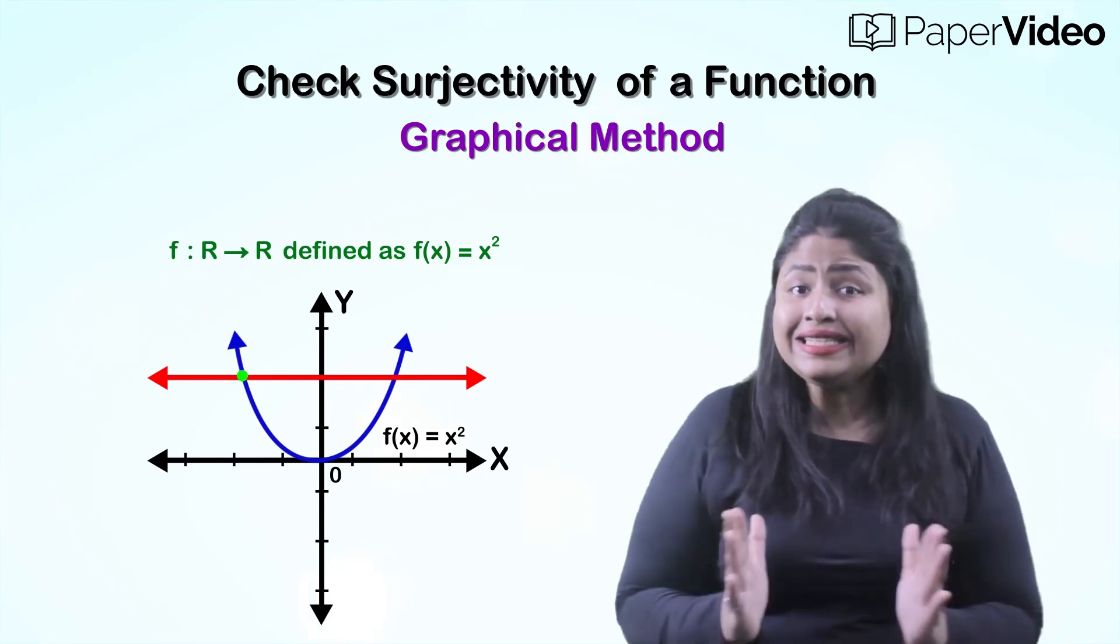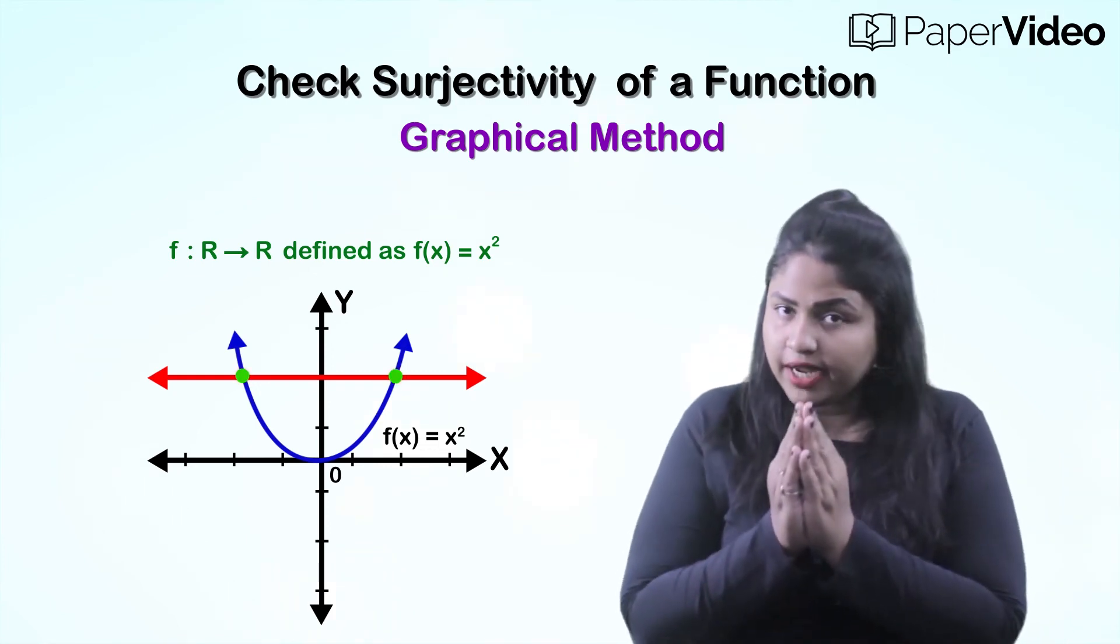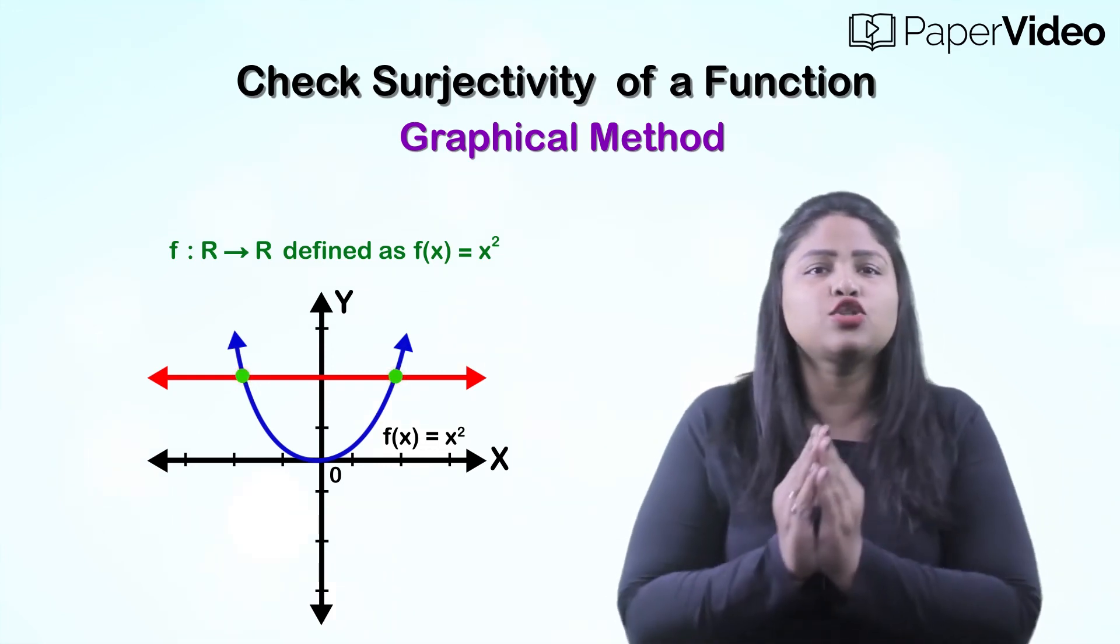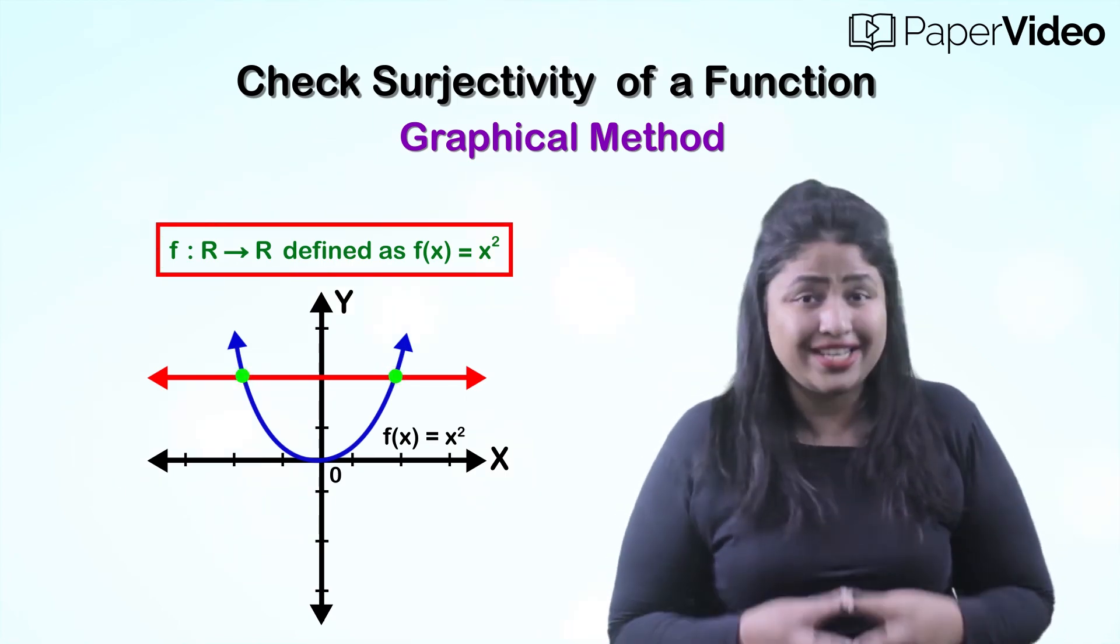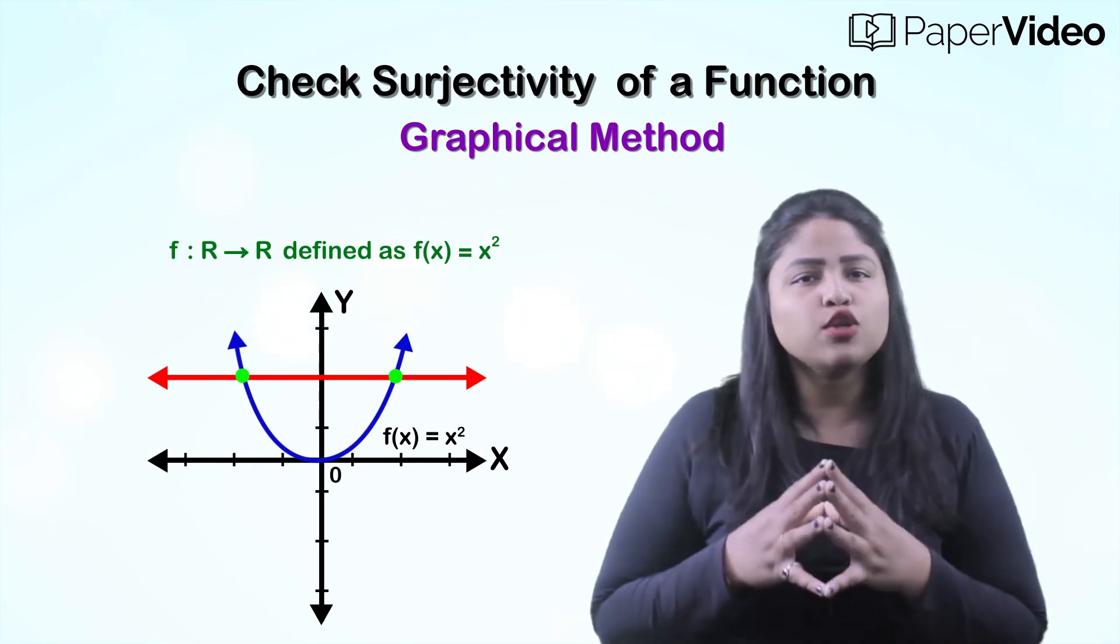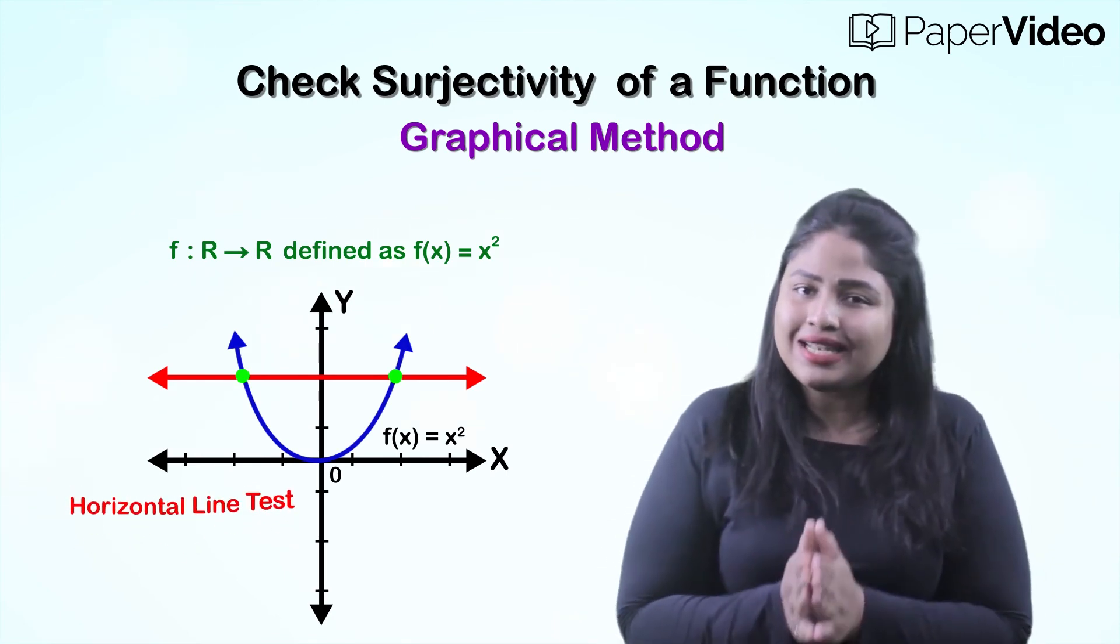Here we can see that the horizontal line intersects the curve x multiplied by x equals to x² at two points. Therefore, we can say that the given function is a surjection. This graphical method is also known as the horizontal line test.